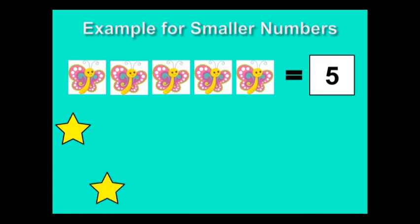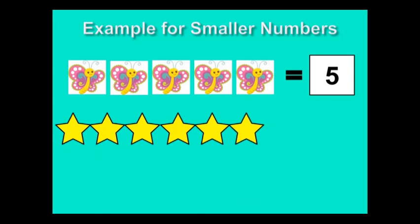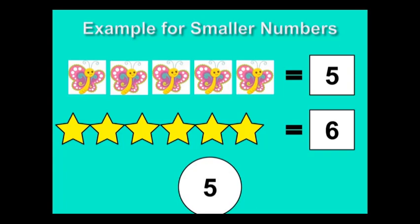There are 5 butterflies. 1, 2, 3, 4, 5, 6. There are 6 stars. The number 5 is a smaller number than 6.